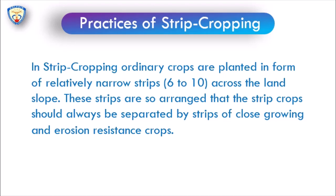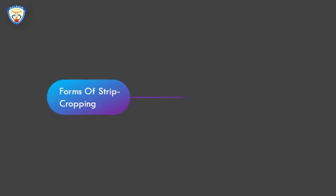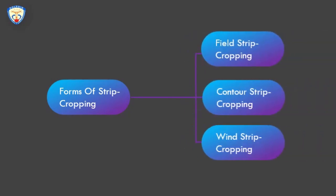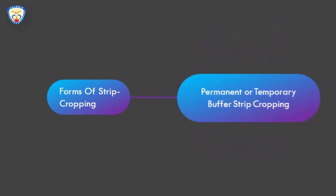There are different forms of strip cropping according to condition or locality. The first is field strip cropping, the second is contour strip cropping, the third is wind strip cropping, and the fourth is permanent or temporary buffer strip cropping.